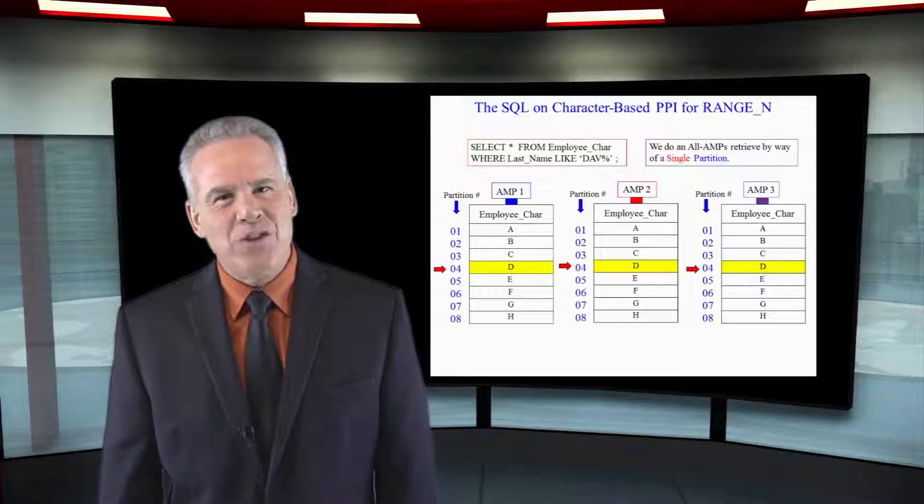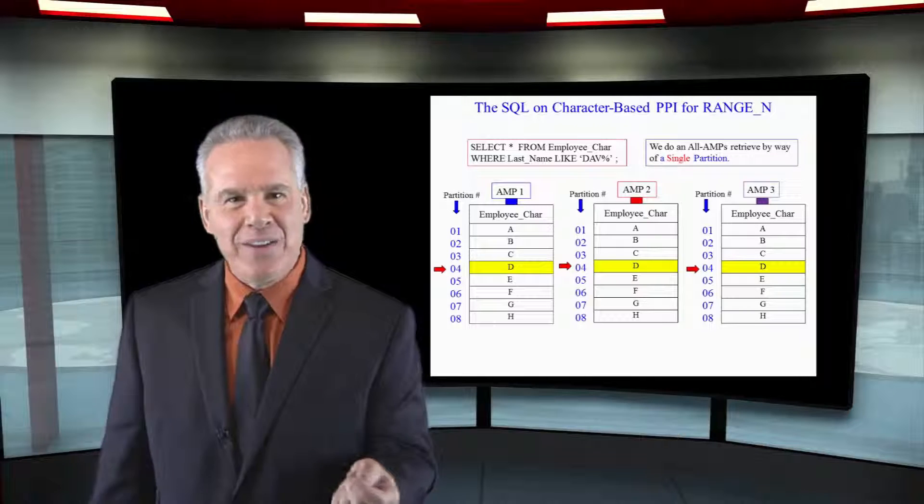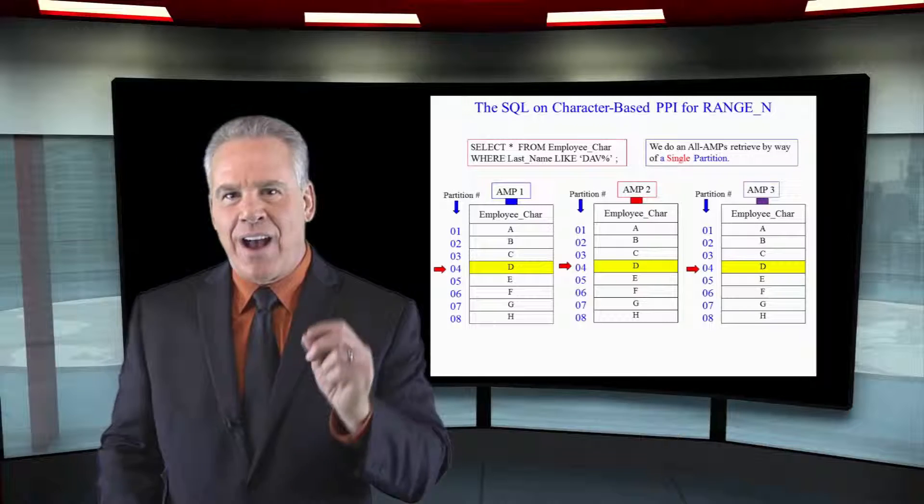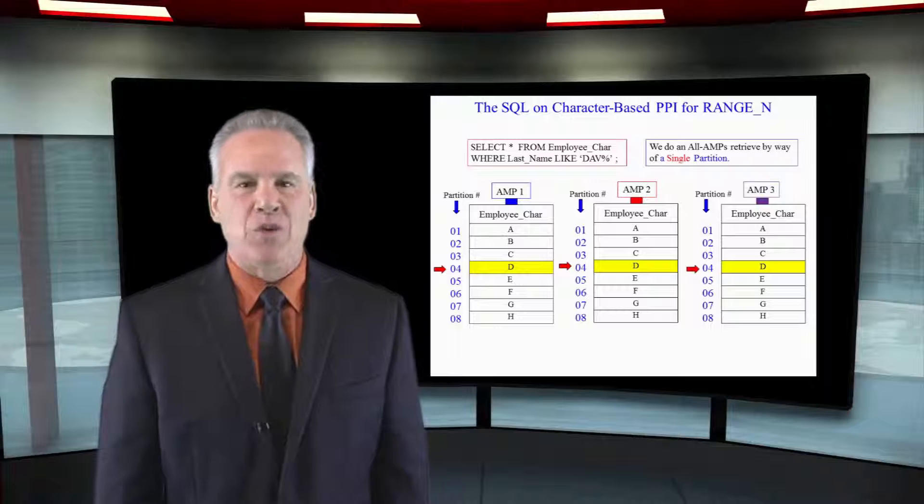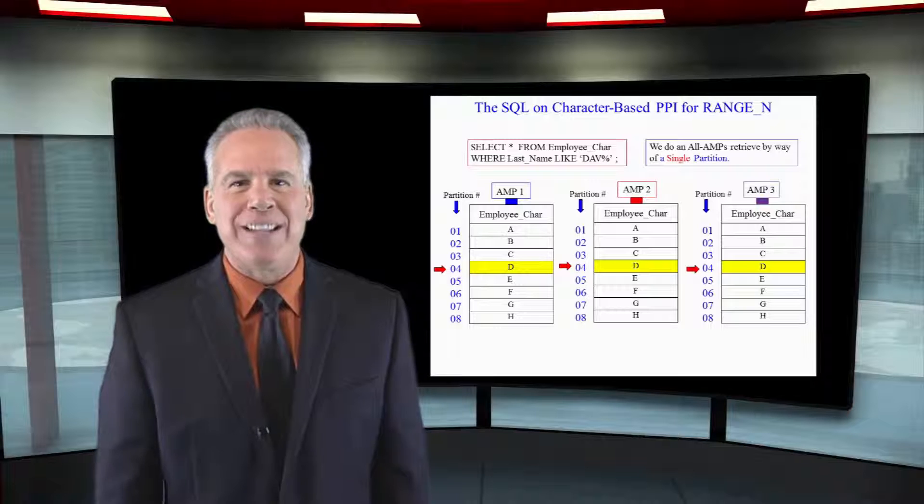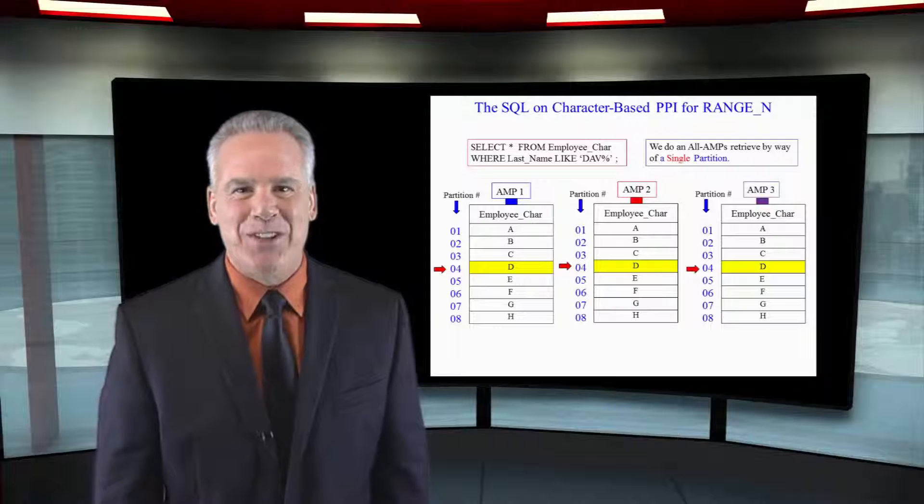I wasn't sure if their last name was Davis or Davey. I'm going to run my query now: select everything from my table where the last name is like, starts with D-A-V percent. And now the parsing engine is going to look at that and say, let's do an all-AMP retrieve from a single partition, the D partition.